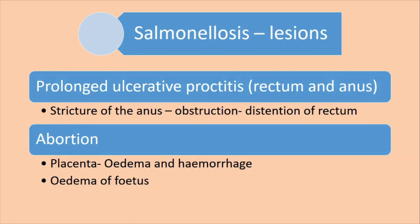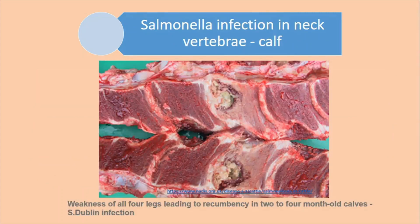Another lesion is prolonged ulcerative proctitis — inflammation of the rectum and anus. Sometimes there will be thickening of the anus and stricture, causing obstruction and resulting in enlargement or distension of the rectum. In the case of abortion, placental edema and hemorrhage can be seen, and the fetus may also get edematous. There is also a peculiar case where infection in the vertebrae of the neck causes all four legs to become paralyzed, resulting in recumbency.